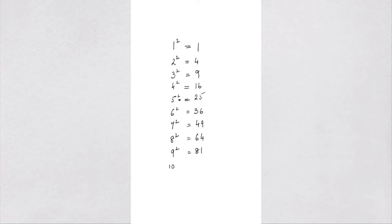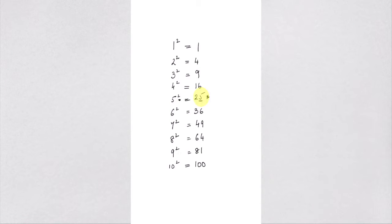The first thing I want you to do is learn the squares of numbers between 1 and 10. For example, 1 squared is equal to 1, 2 squared is equal to 4, and so on. Once you do this, you will start seeing patterns in these squares. For example, there is one number, 25, whose last digit ends in 5.